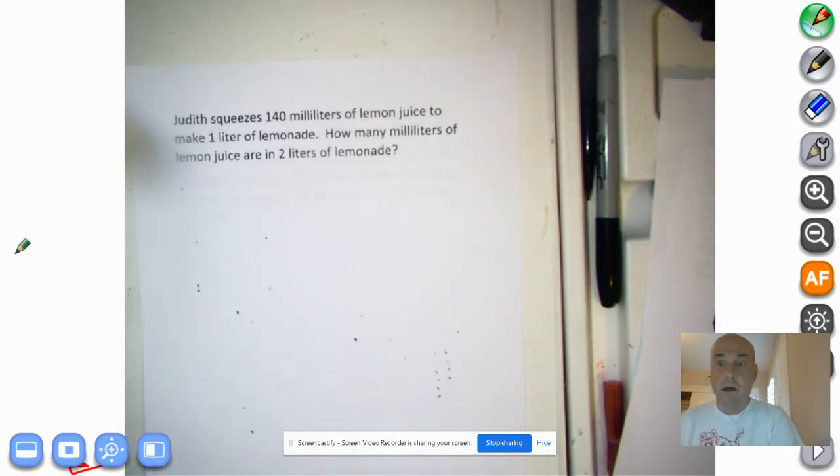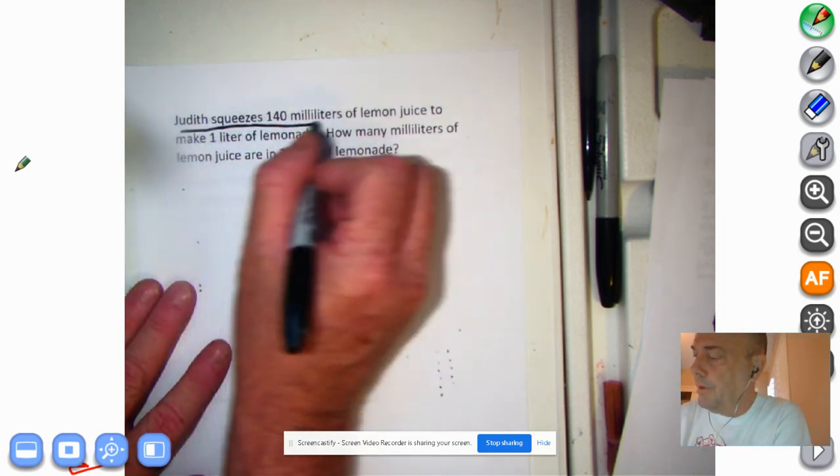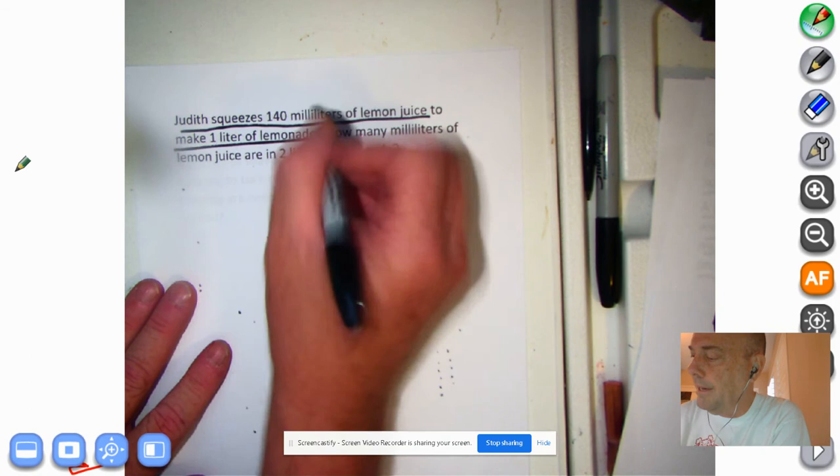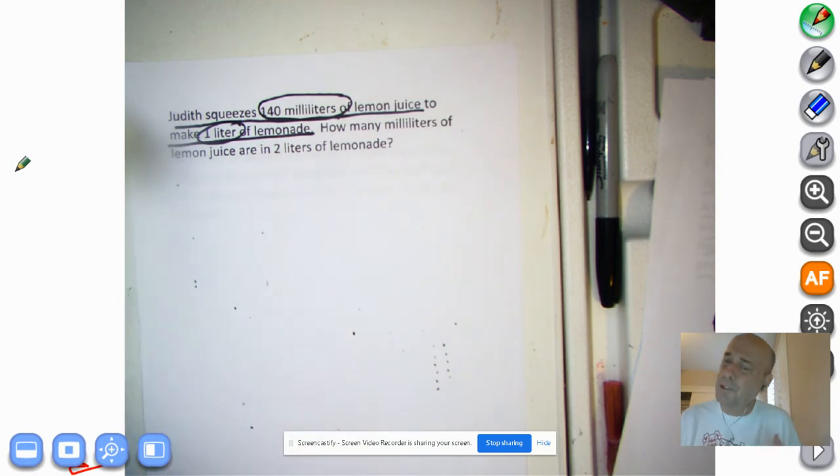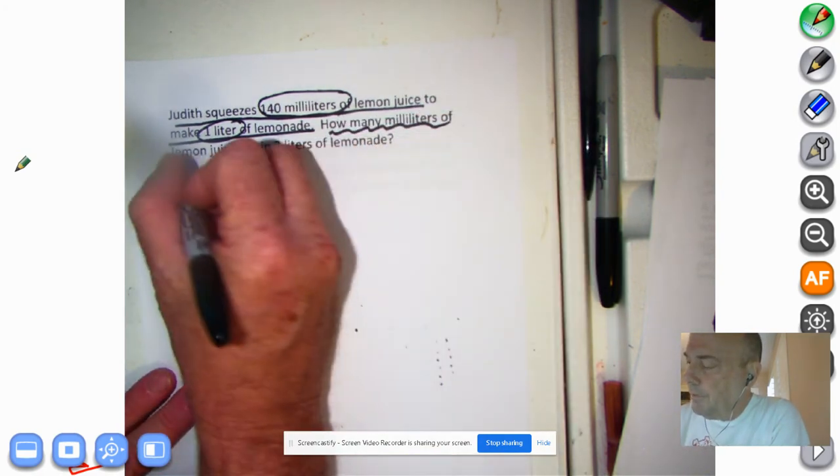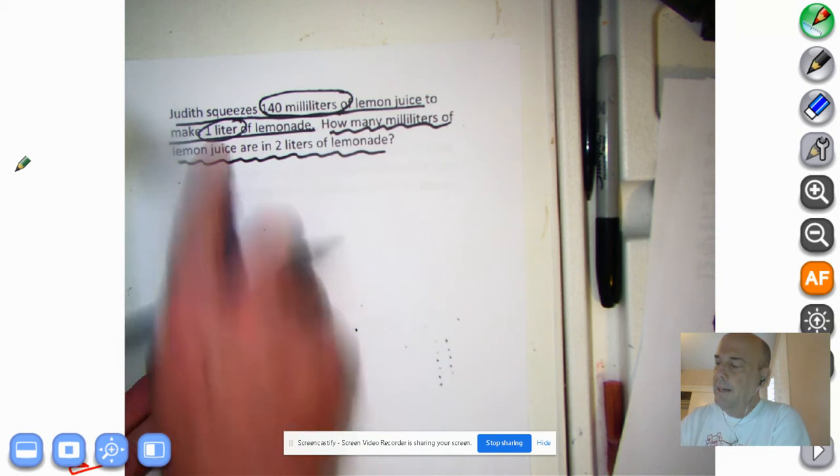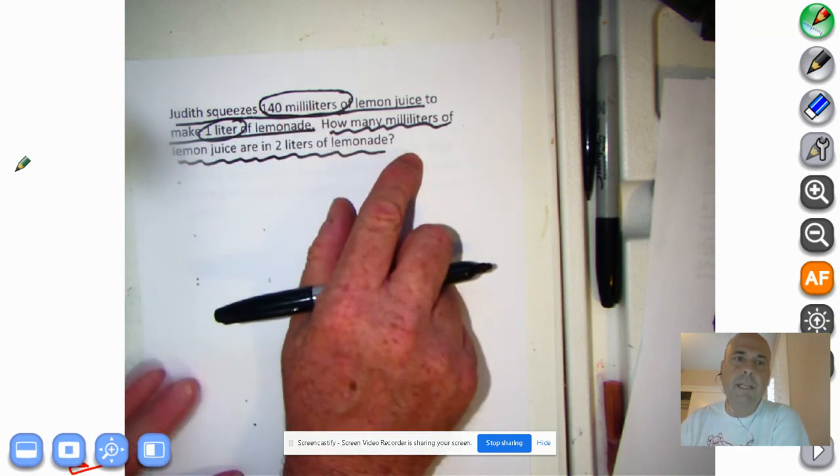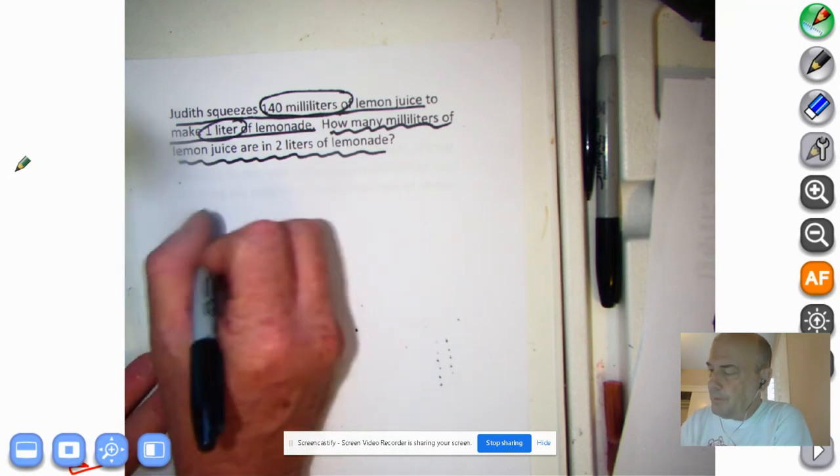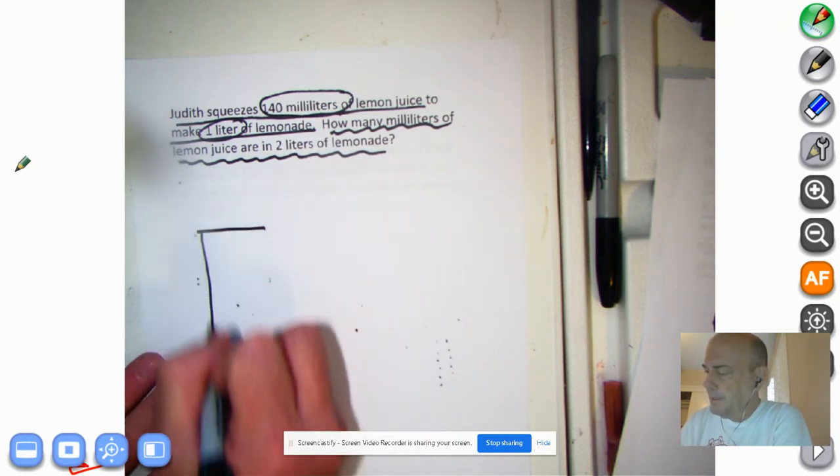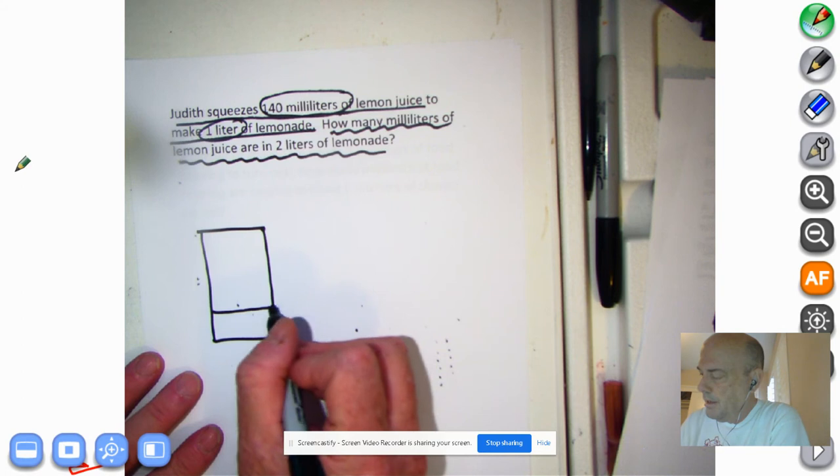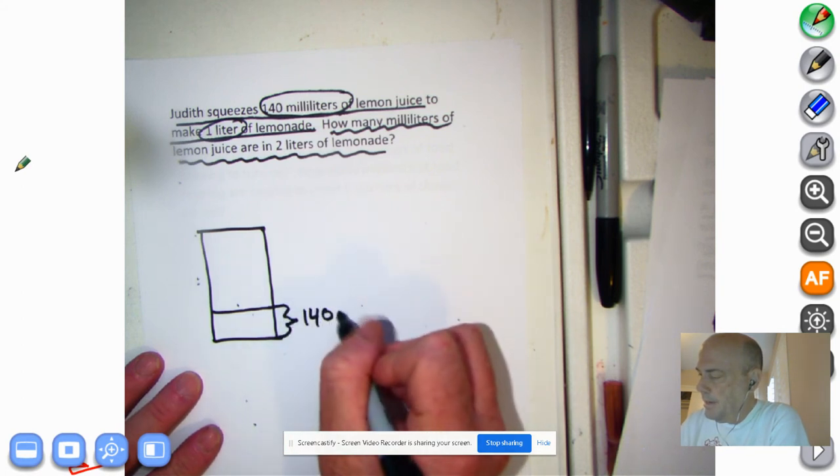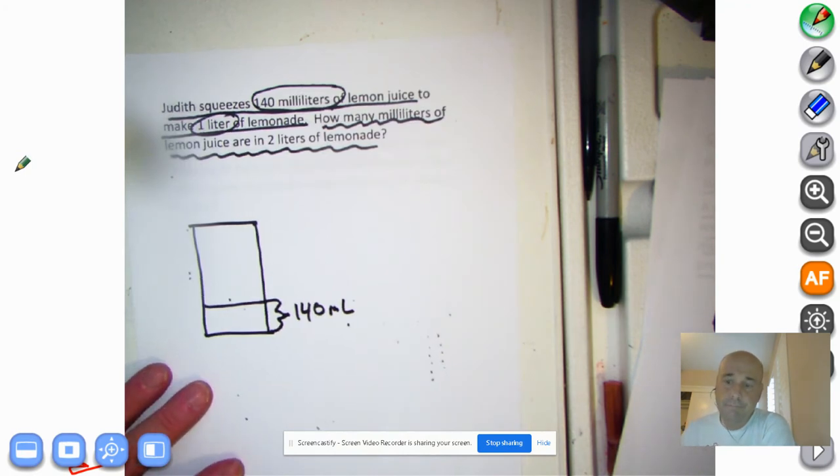This one was kind of a tough one. So Judith squeezes 140 milliliters of lemon juice to make 1 liter of lemonade. And I thought to myself, but how can you make 1 liter of lemonade with only 140 milliliters of lemon juice? Well, of course, you add water to lemon juice to make lemonade. This is how many milliliters of lemon juice are in 2 liters of lemonade. So 1 liter has 140 milliliters. 2 liters has, we're going to find out. So what will we do? Let's take a look here and just visualize. Now this is a liter of lemonade, and it has 140 milliliters of lemon juice.